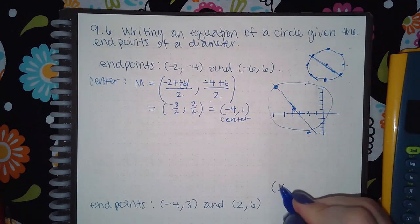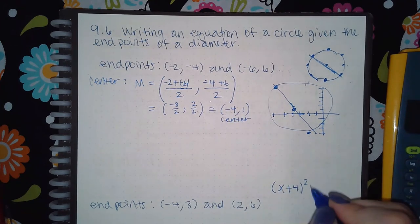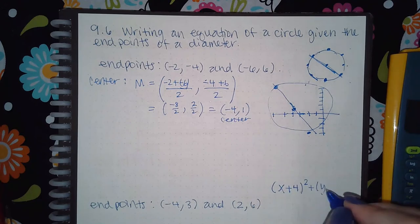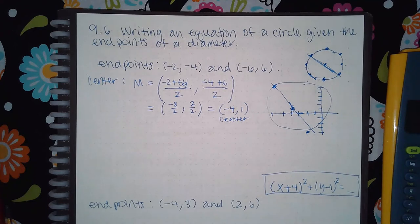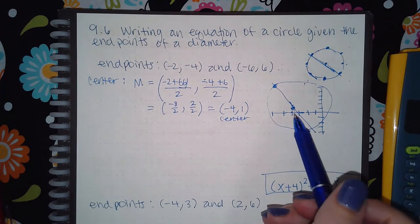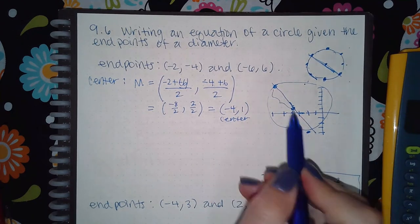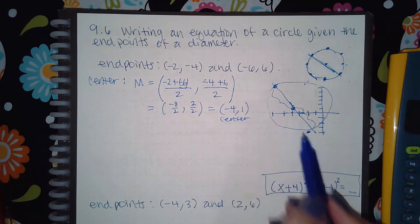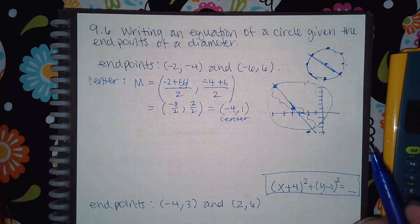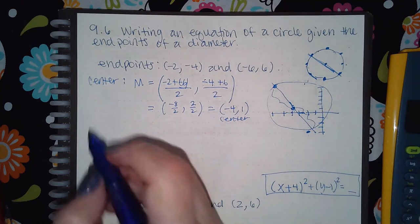We need the center for the equation. That tells me the equation is going to be x — opposite sign of negative four, so plus four — squared, and then y minus one squared. I just need to know what the radius squared is. So I need to figure out what the radius is — I could use either endpoint distance to the center; it's the same answer either way.